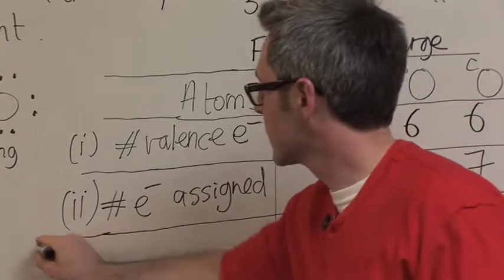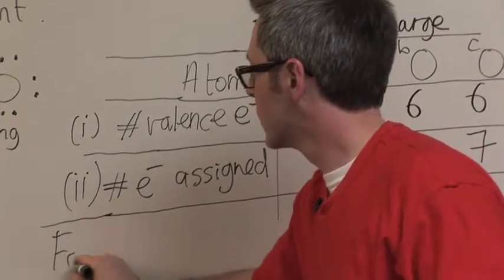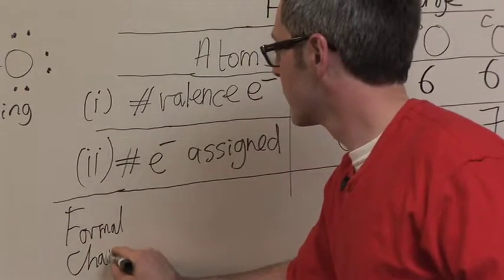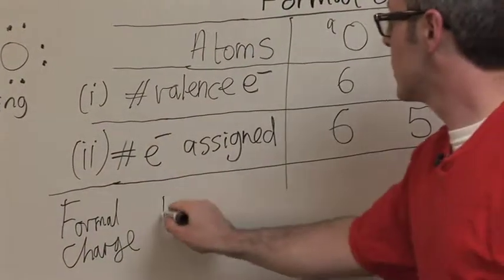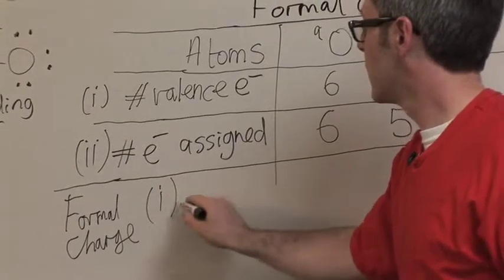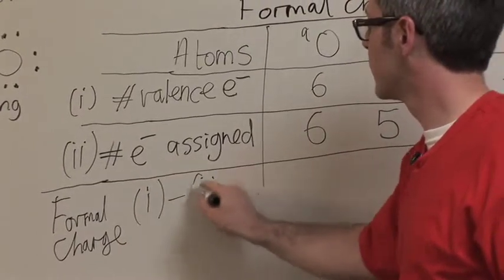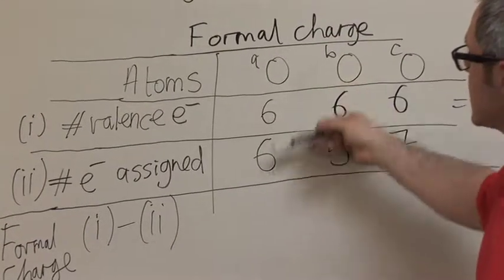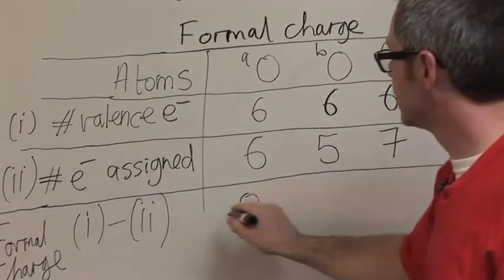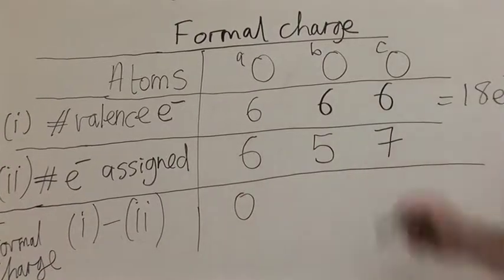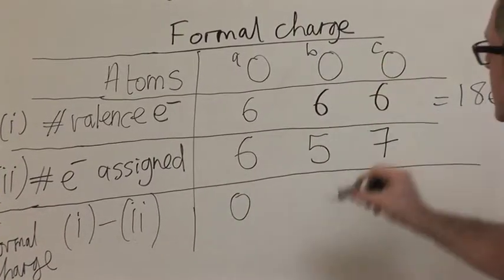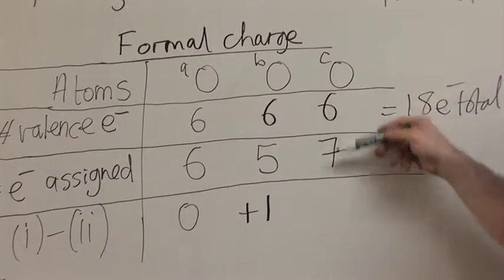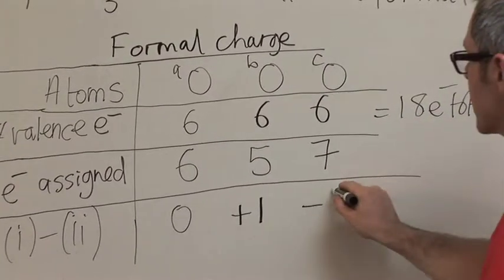And finally, I'm going to calculate the formal charge. So the formal charge is row one minus row two. So for oxygen A, it's six minus six, which is zero. For oxygen B, it's six minus five, which is plus one. And for oxygen C, it's six minus seven, which is negative one.